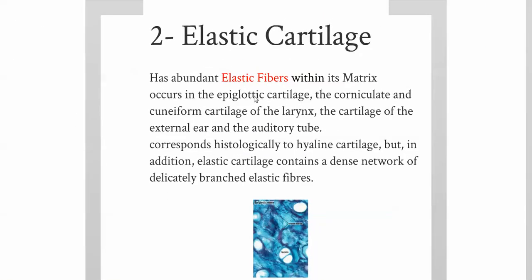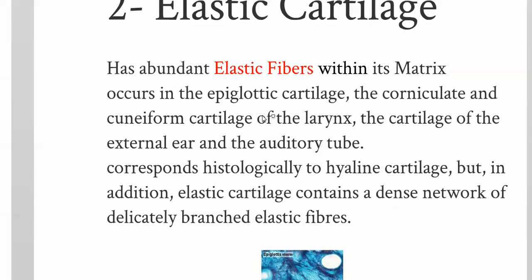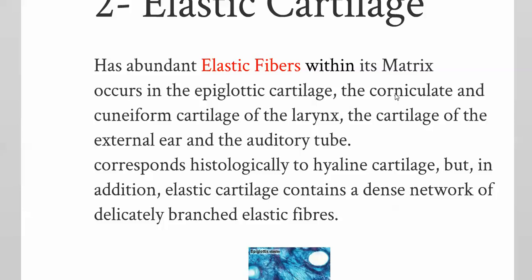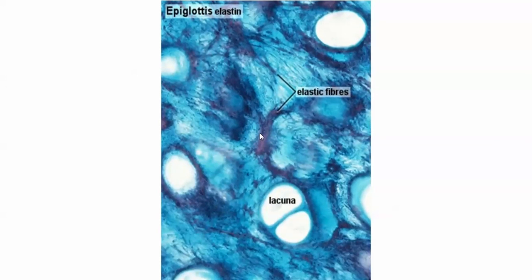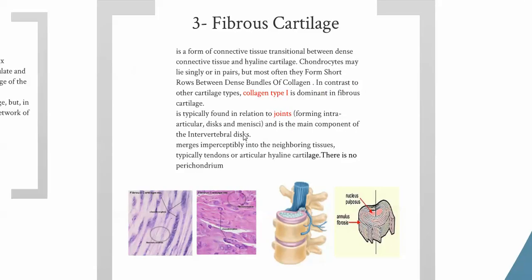Elastic cartilage has abundant elastic fibers within its matrix. It is found in the epiglottic cartilage, corniculate and cuneiform cartilages of the larynx, cartilage of the external ear, and the auditory tube. In the image, the matrix is not clear — you can see the elastic fibers — and that is the basic difference between elastic and hyaline cartilage.